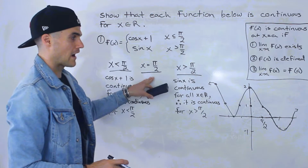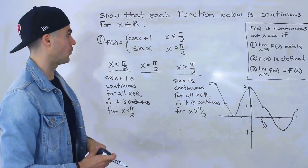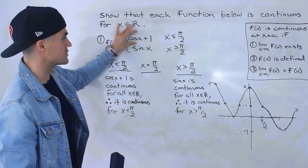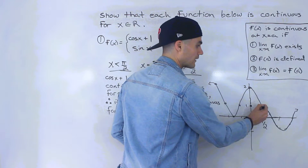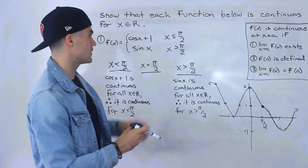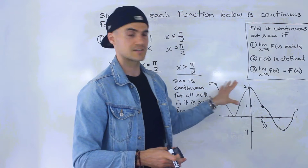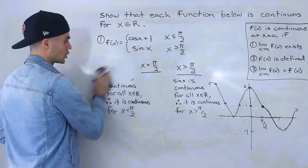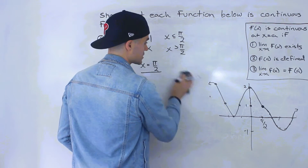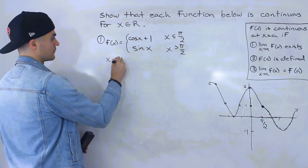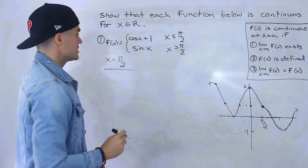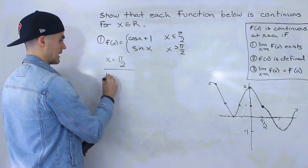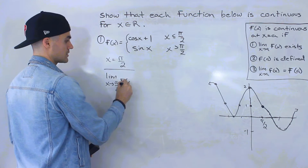Notice that at that x value of π/2, the y values of both functions are equal — they're both equal to one. sin(π/2) gives one, and cos(π/2) plus one also gives one. Some teachers may be okay with just showing that. But I'm going to go into more detail and go through all three conditions at x = π/2. The first thing is to show that the limit as x approaches π/2 of this piecewise function exists.